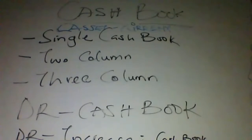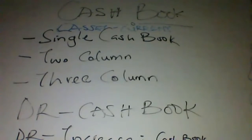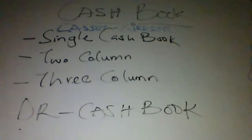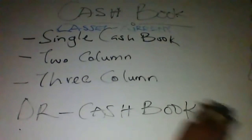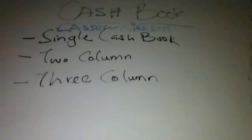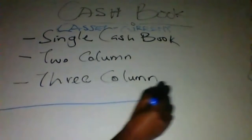In the cash book we have three types: the single column, the two column, and the three column cash books. In as much as we already know that your cash book has a debit balance, I'm trying to make this as brief as possible so we can wrap things up on time.